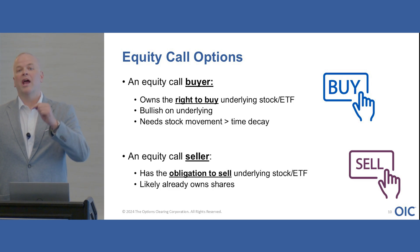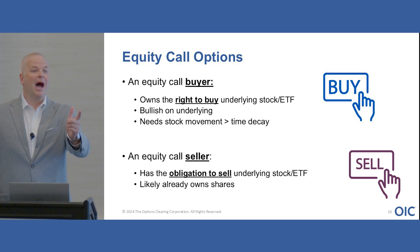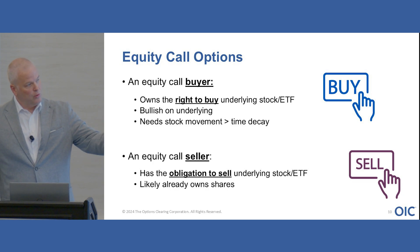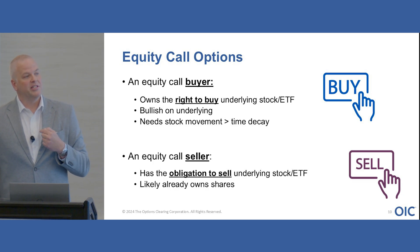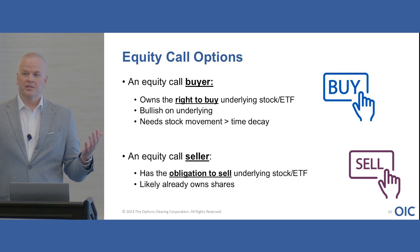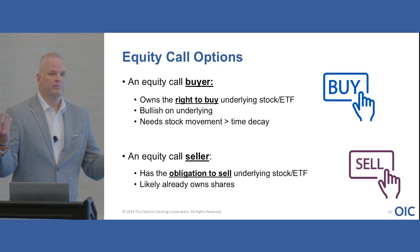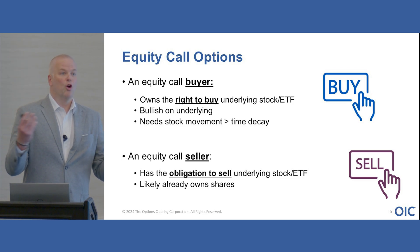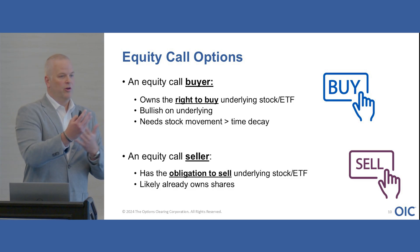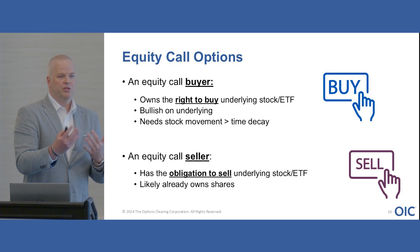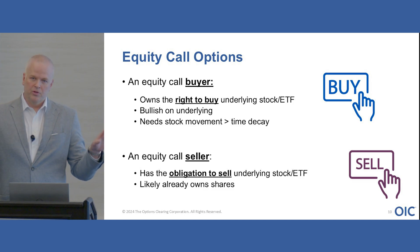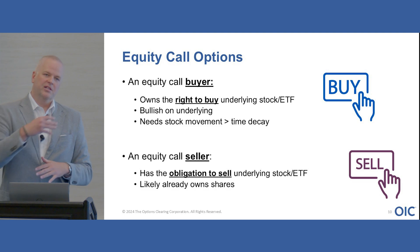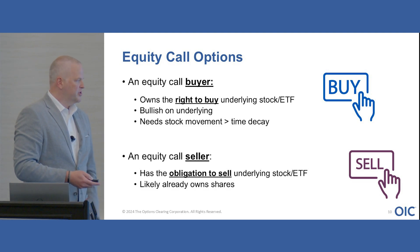When you're transacting in the options space, you're technically transacting behind the scenes with OCC, which acts as the guarantor for all those contracts so you don't have individual counterparty risk. If you had a bilateral trade agreement and that person couldn't cover their obligations, the agreement would break down. With a centrally cleared facility like OCC, that problem goes away because OCC guarantees all of those contracts.